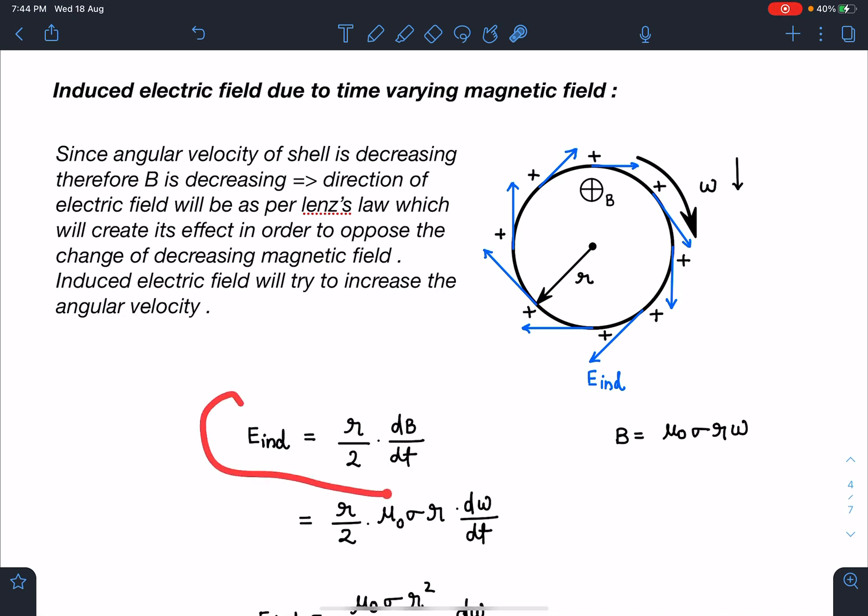The induced electric field will try to increase this decreasing omega so that it can compensate for decreasing flux. E_induced is going to be r/2·dB/dt. You can write for outside region also, or inside - field will exist both inside and outside. I'm taking here the inside part because it is continuous. If you remember, it is going to be r/2·dB/dt here and R²/2r·dB/dt outside, where limit will exist for r equal to R.